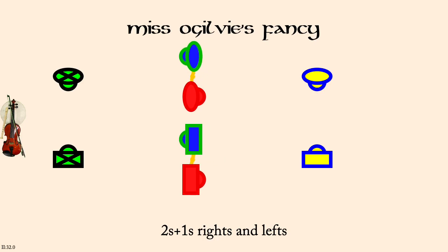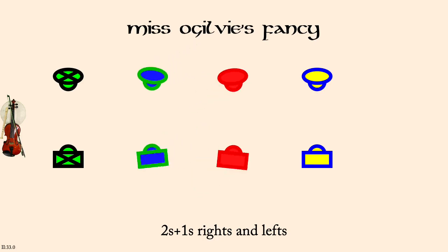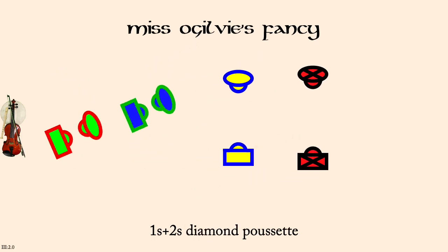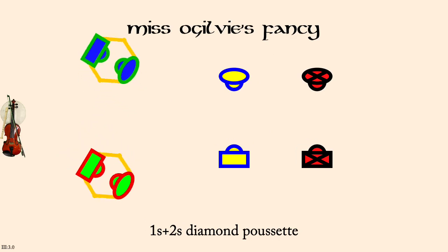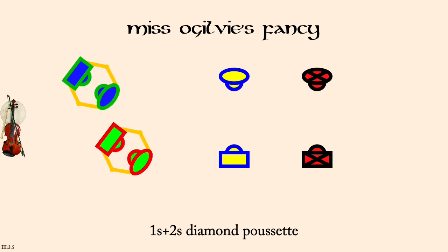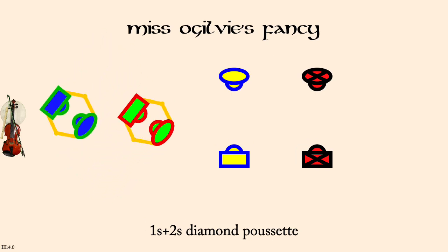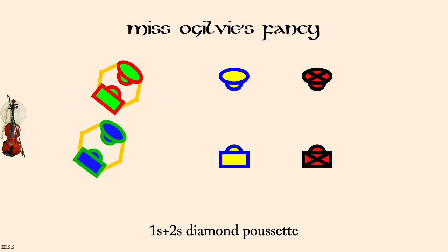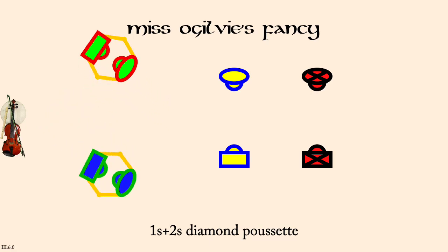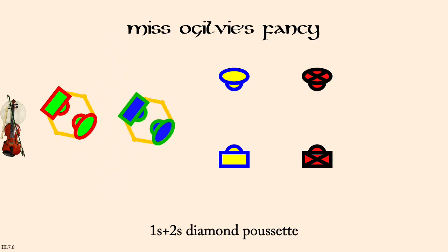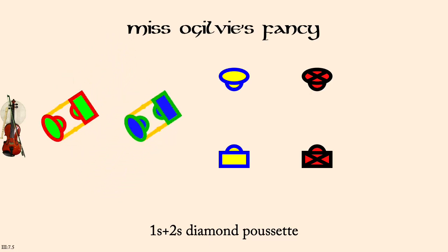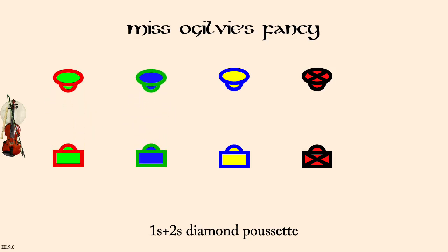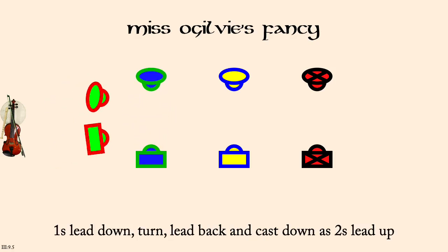Ones and twos, Diamond Pousset. Ones lead down, turn, lead back, and cast down as twos lead up.